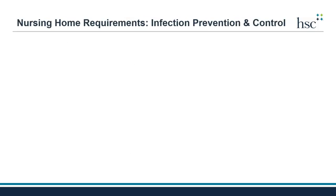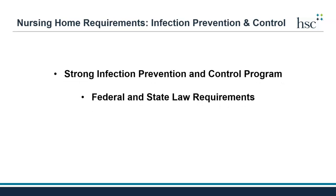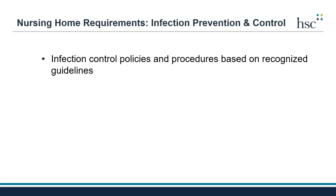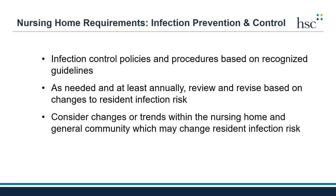Quality care can only be achieved when nursing homes have a strong program in place to prevent and control infections. Federal and state laws require nursing homes to have current infection control policies and procedures, including those related to cleaning and disinfection, based on recognized guidelines. As necessary, and at least annually, nursing homes must review and revise policies and procedures based on possible changes to infection risks in residents, and consider changes or trends, including infection trends with multi-drug resistant organisms, both within the nursing home as well as the general community where the nursing home is located.